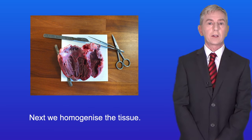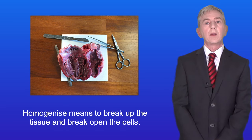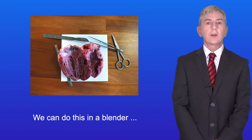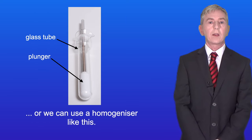Next we homogenize the tissue. Homogenize means to break up the tissue and break open the cells. Now we can do this in a blender or we can use a homogenizer like this.